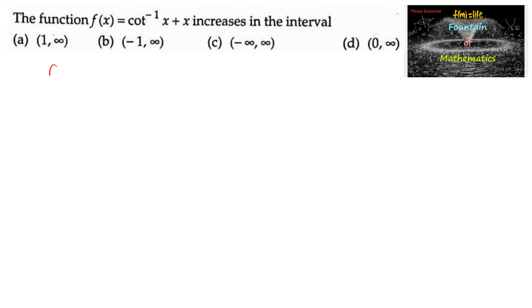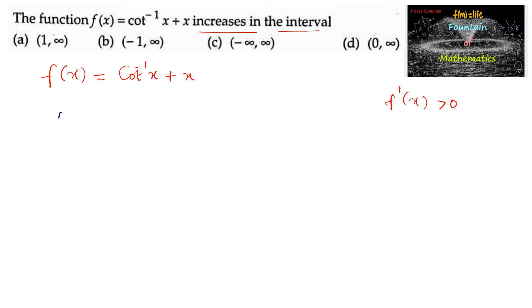The function f(x) = cot⁻¹(x) + x increases in which interval? For an increasing function, f'(x) > 0. Let's find its differentiation. f'(x) equals the differentiation of cot⁻¹(x), which is -1/(1 + x²), plus the differentiation of x.